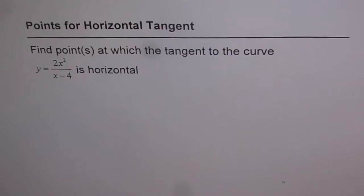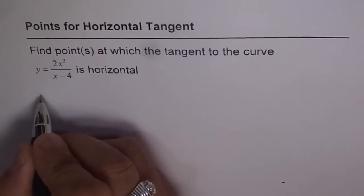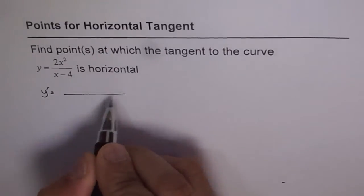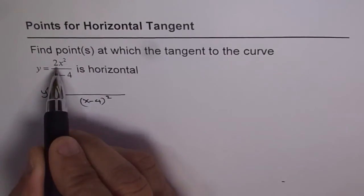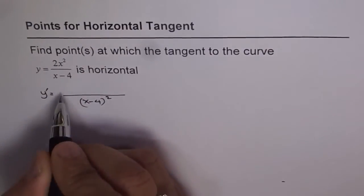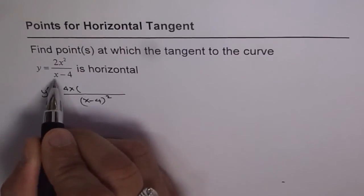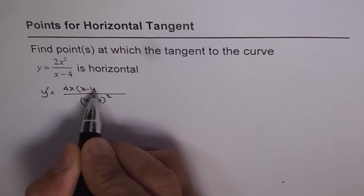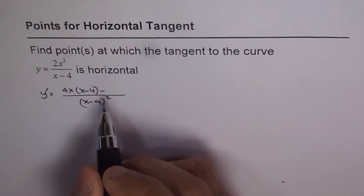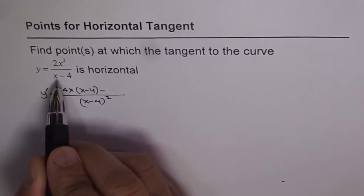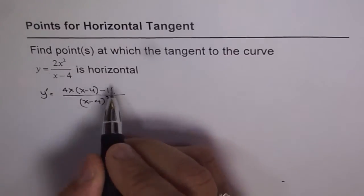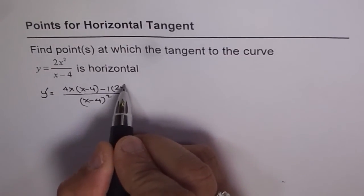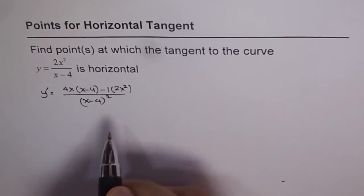So for that we will find the derivative of the function using quotient rule. And derivative for this is denominator will be x minus 4 whole square. Derivative of the first function which is 2x square will be 4x times the denominator which is the second function for us minus derivative of the second function which is 1, times the second function 2x square.